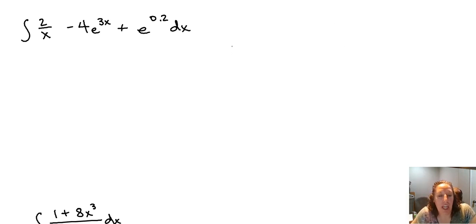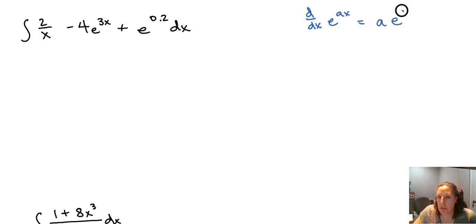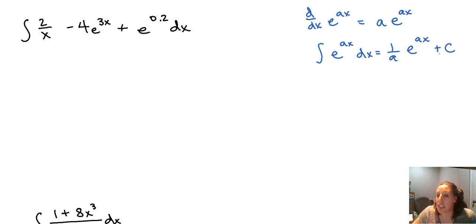In this video we're going to take a look at finding the antiderivative or the indefinite integral of some exponential and log function derivatives. Remember that the derivative of e to the ax was equal to a times e to the ax. Going backwards, the integral of e to the ax is going to be 1 over a times e to the ax plus C. We'll always have a plus C on these indefinite integrals.